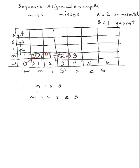Moving into the next row: going up means inserting a blank on 'misses', so 5+1=6. From the left gives 3+1=4. Diagonally, matching M and E, gives 4+2=6. Minimum is four from the left. Then 6+1=7, 4+1=5, 5+2=7, giving five. For the next interior cell: 0+1=1, 1+2=3, 2+1=3 — minimum is one, coming from below.